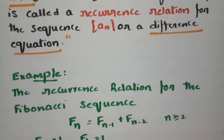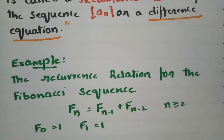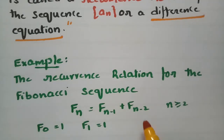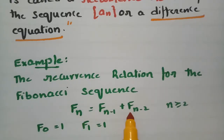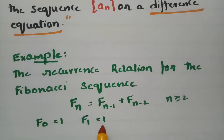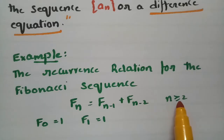An example of this is the recurrence relation for the Fibonacci sequence. Fₙ is given as Fₙ₋₁ plus Fₙ₋₂. This is the recurrence relation, with initial conditions F0 = 1 and F1 = 1, where n must be greater than or equal to 2.